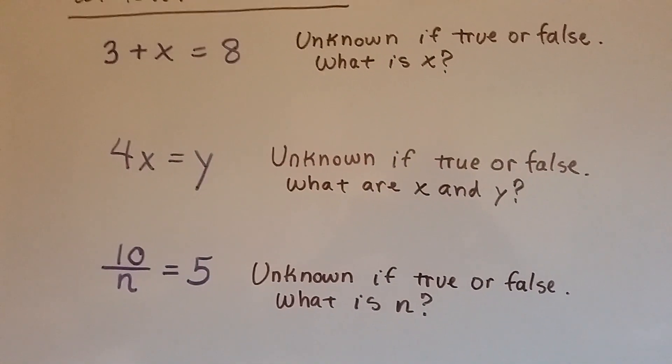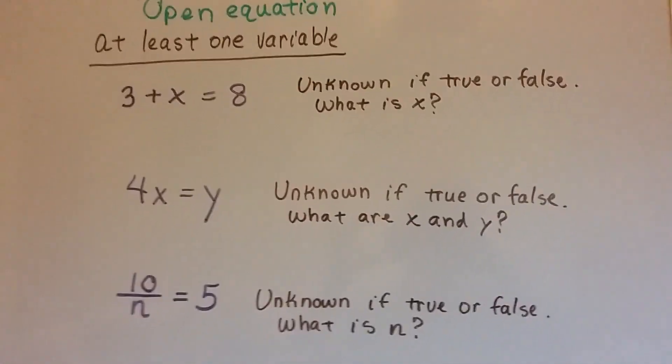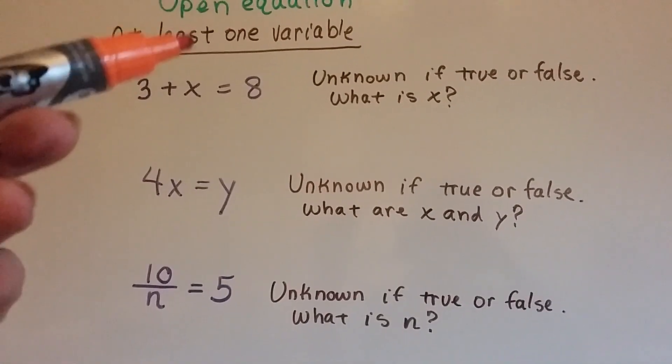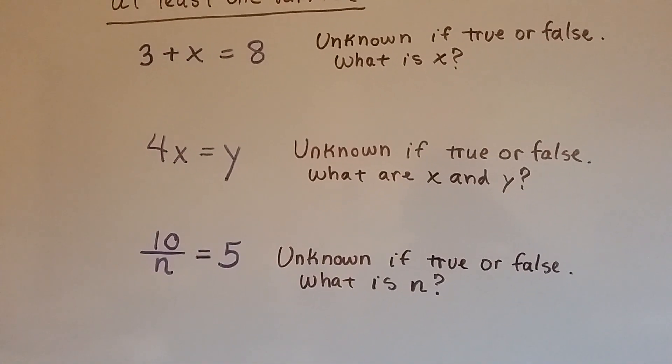How about 4x equals y? This one has two variables. It has to have at least one variable, so it could have 5. It just has to have at least one. So 4x equals y, it's unknown if it's true or false because we don't know what x and y are.